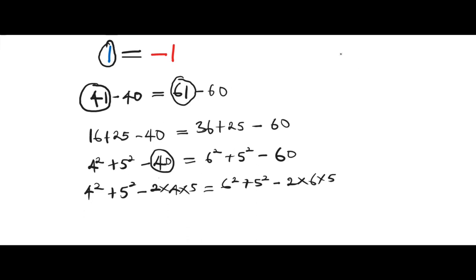So let's make use of this identity: x minus y all squared equals to x squared plus y squared minus 2xy. So this is a known identity and let's apply that here.